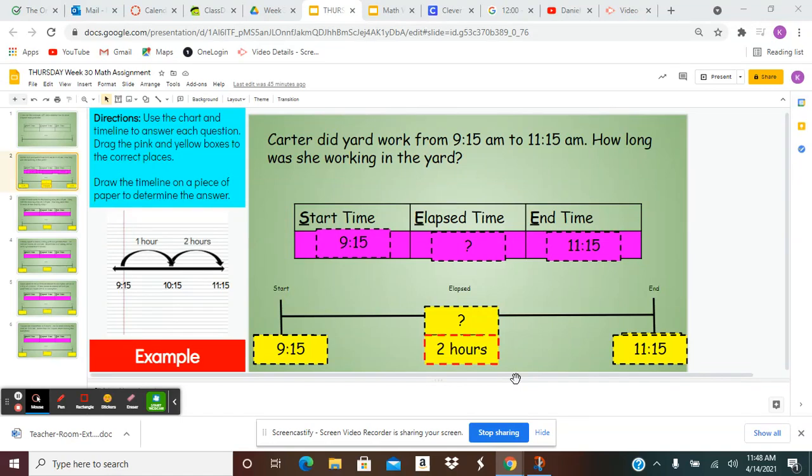Here is an example of how you will complete this assignment. Remember the first three we will do in class together and the last two you will do on your own. The directions say to use the chart and the timeline to answer each question. Drag the pink and yellow boxes to the correct places.